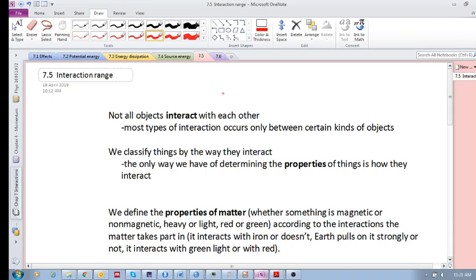Most types of interaction occur only between certain kinds of objects. For example, two objects that are magnetic interact with each other.